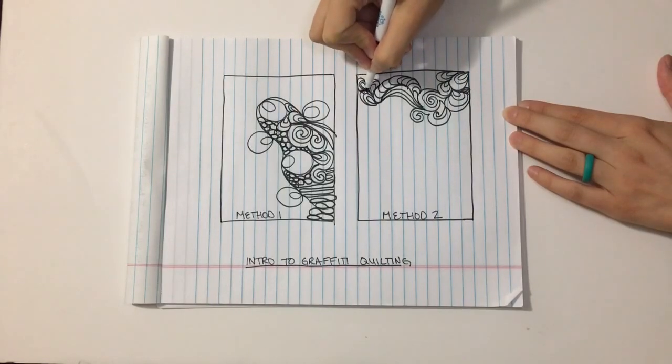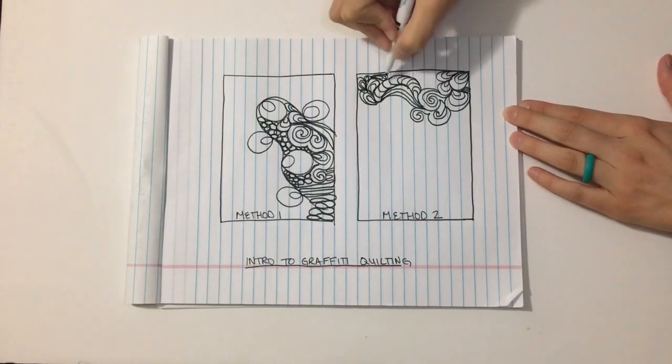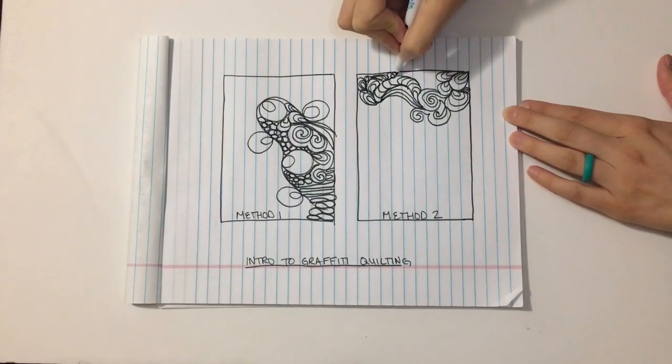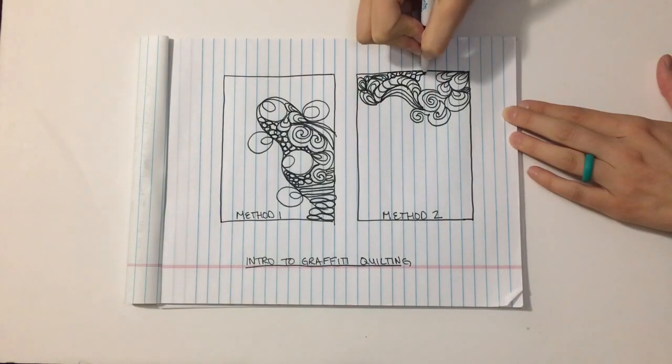Now when I'm graffiti quilting, I do tend to use all curvy designs. I think they just come together more smoothly. It's easier to transition from one design to the next if they have sort of common structural points.